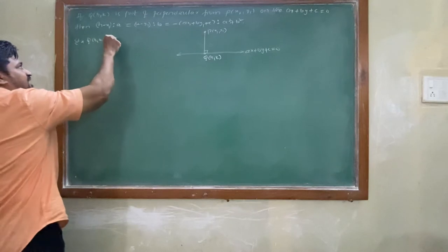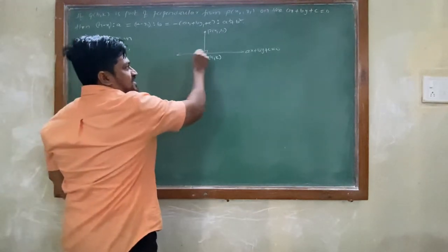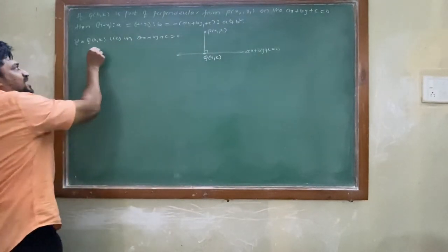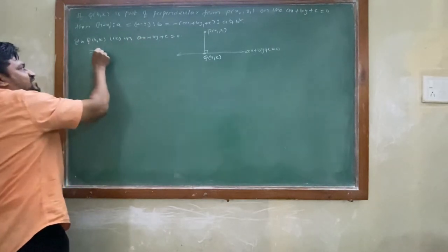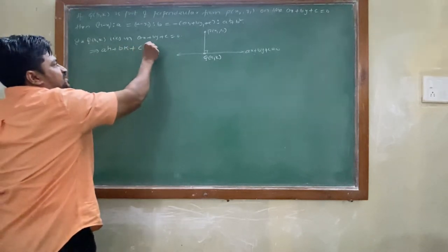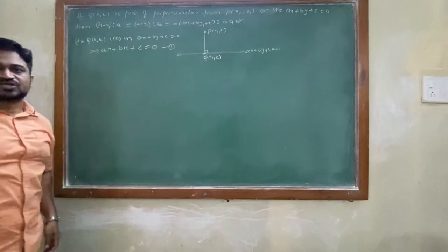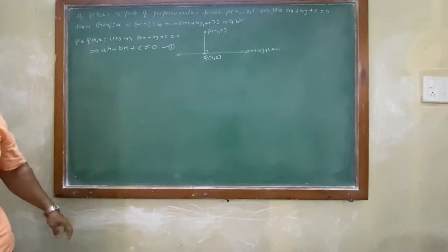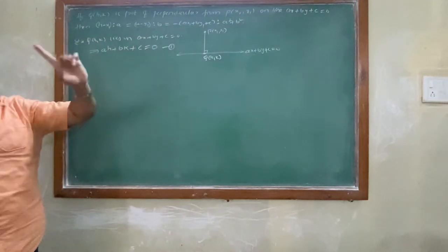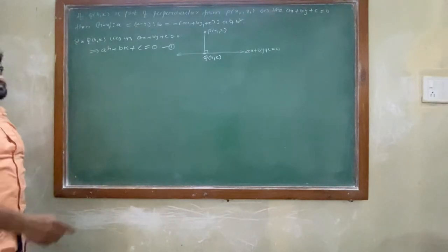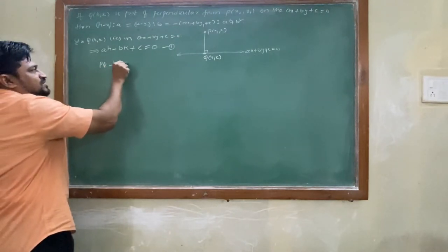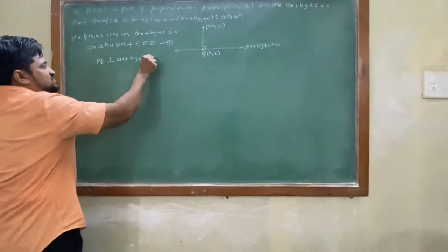Q(h,k) lies on the line — whatever point lies on the line satisfies it. That is our first step. Now, PQ is perpendicular to the line ax+by+c=0.